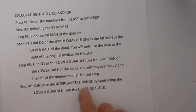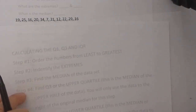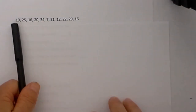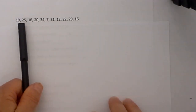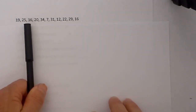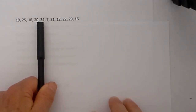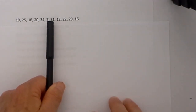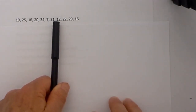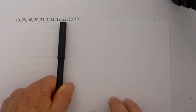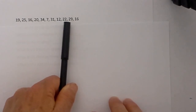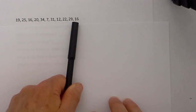So let's go ahead and look at an example and walk through these steps. Here is the first data set: 19, 25, 16, 20, 34, 7, 31, 12, 22, 29, 16.